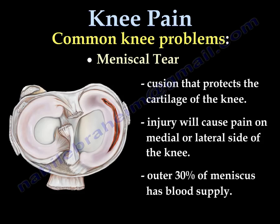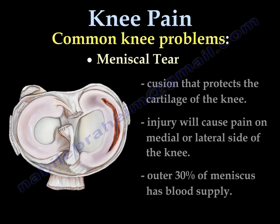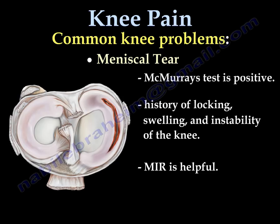Meniscal injury causes pain on the medial or lateral side of the knee. The most specific sign is pain at the joint line itself. The outer 30% of the meniscus is rich in blood supply. The tear presents with a history of locking, swelling, and instability of the knee. The McMurray test is usually positive and MRI is very helpful.